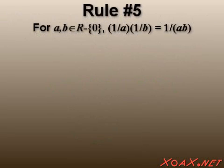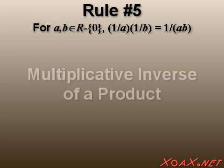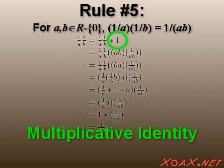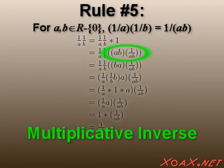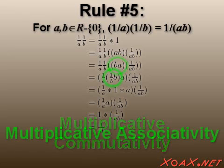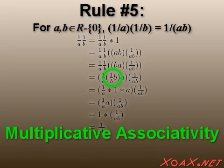The next rule is similar to the last one, but it involves multiplication. This is called the multiplicative inverse of a product. The proof involves the same steps, but for multiplication. We start with the multiplicative identity. Next, we use multiplicative inverses. Then multiplicative commutativity. The next step follows by multiplicative associativity.